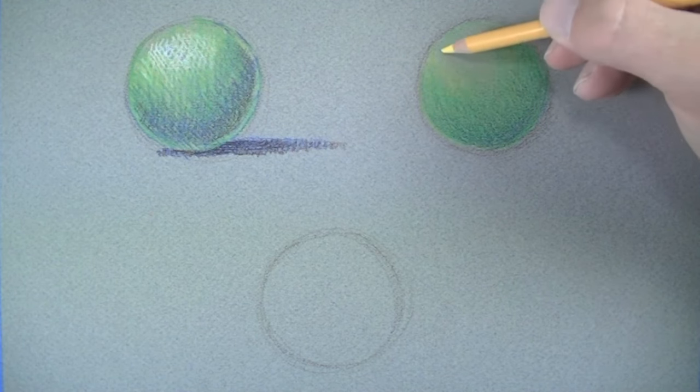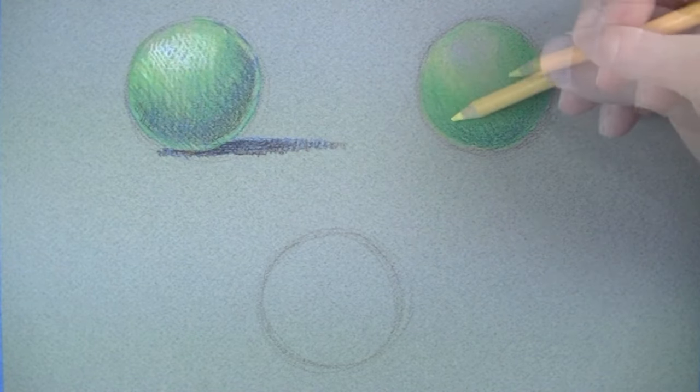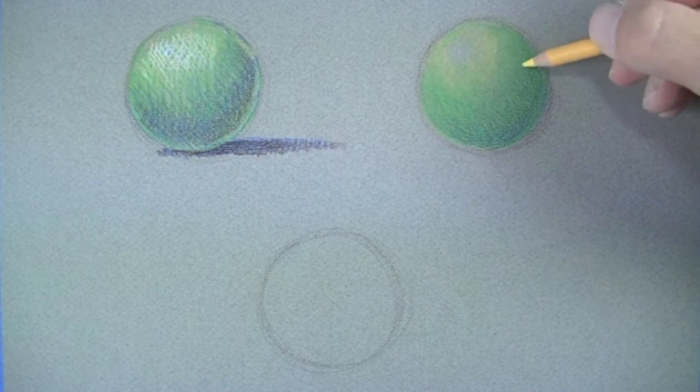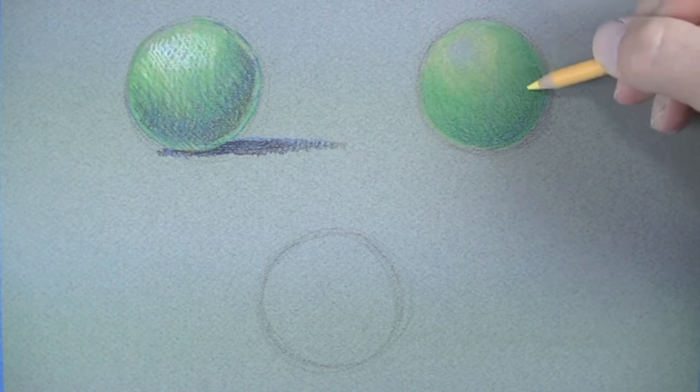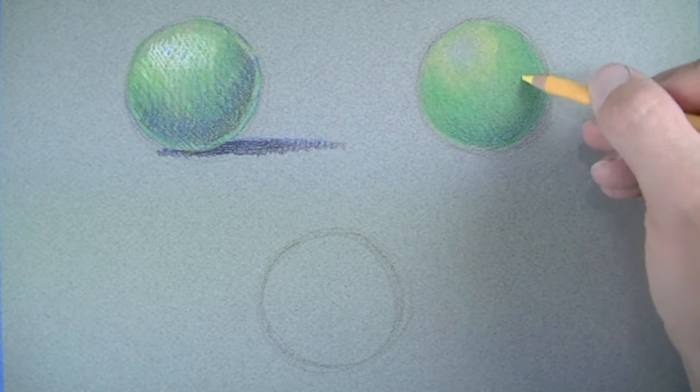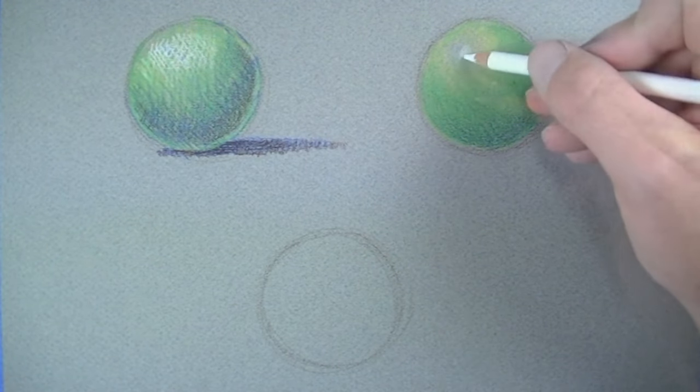After the blue has been established, we'll layer over some of the highlighted side of the sphere using a yellow. Because we want to create a smooth gradation of value and color, we're going to use small, circular strokes here again.